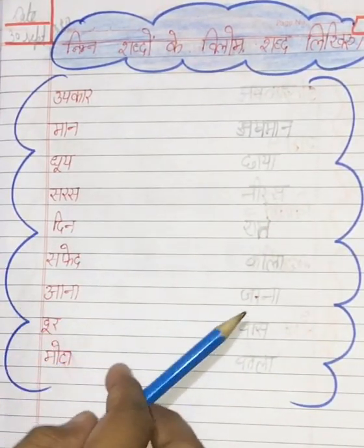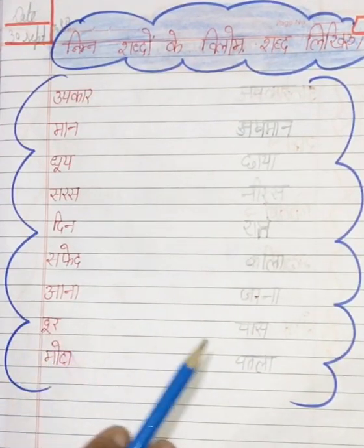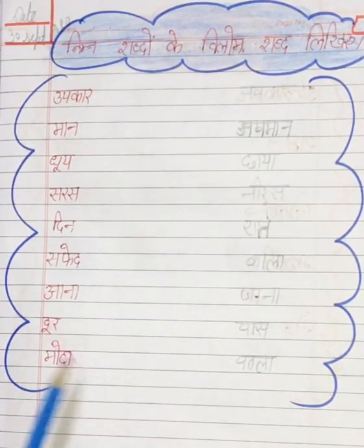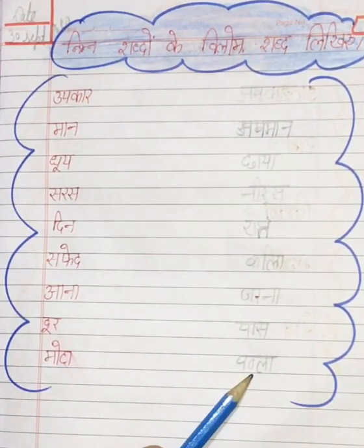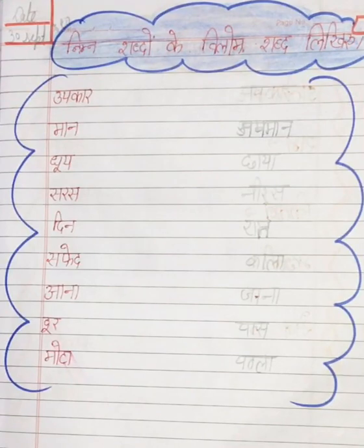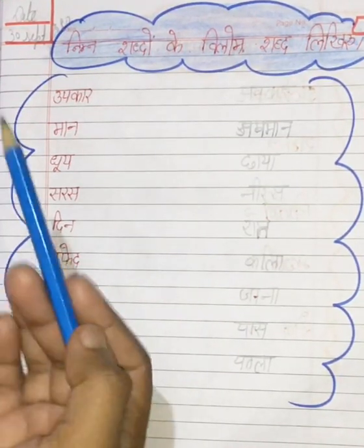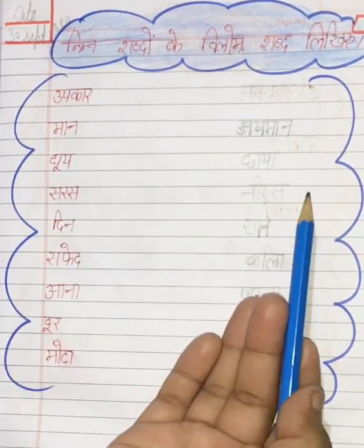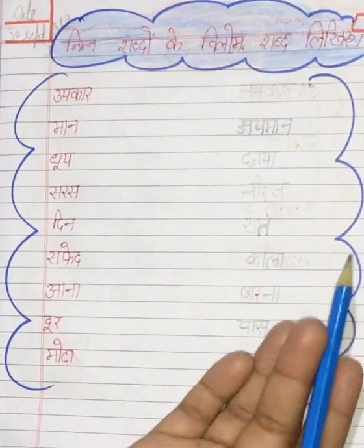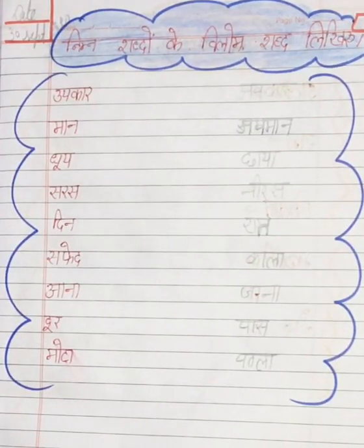आना का विलोम जाना। दूर का विलोम पास। मोटा का विलोम पतला। तो ये सब क्या हैं? ये एक दूसरे के विलोम शब्द हैं। इनको हमने विलोम शब्द में कन्वर्ट किया है।